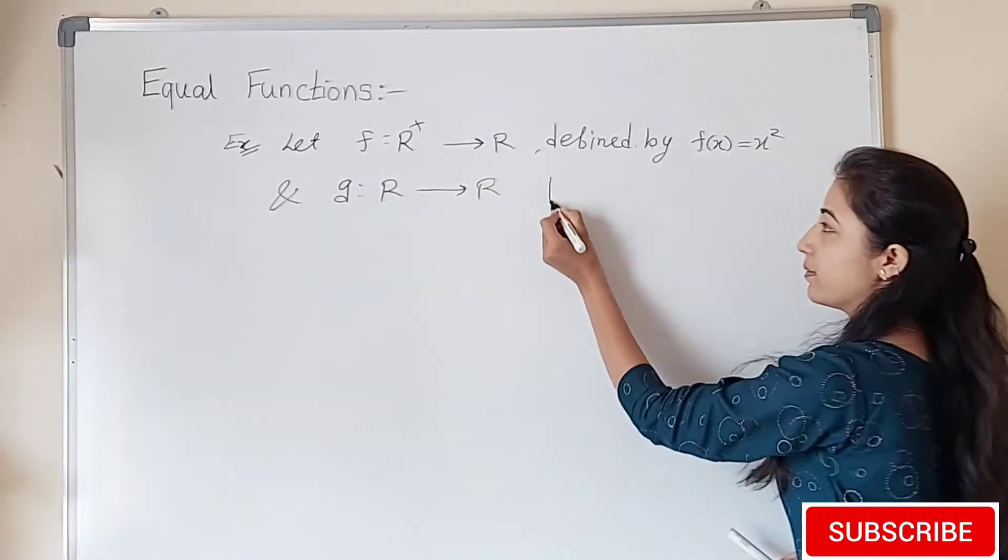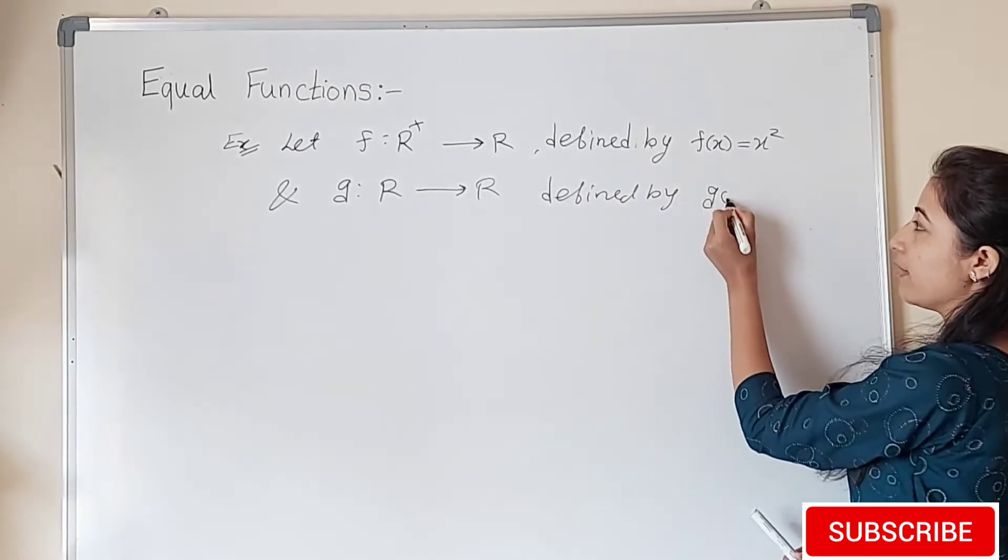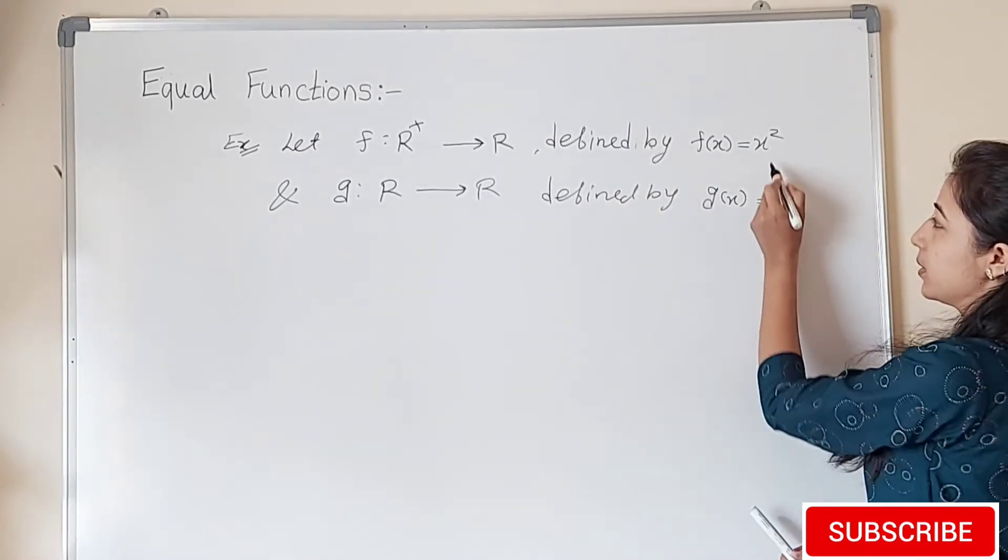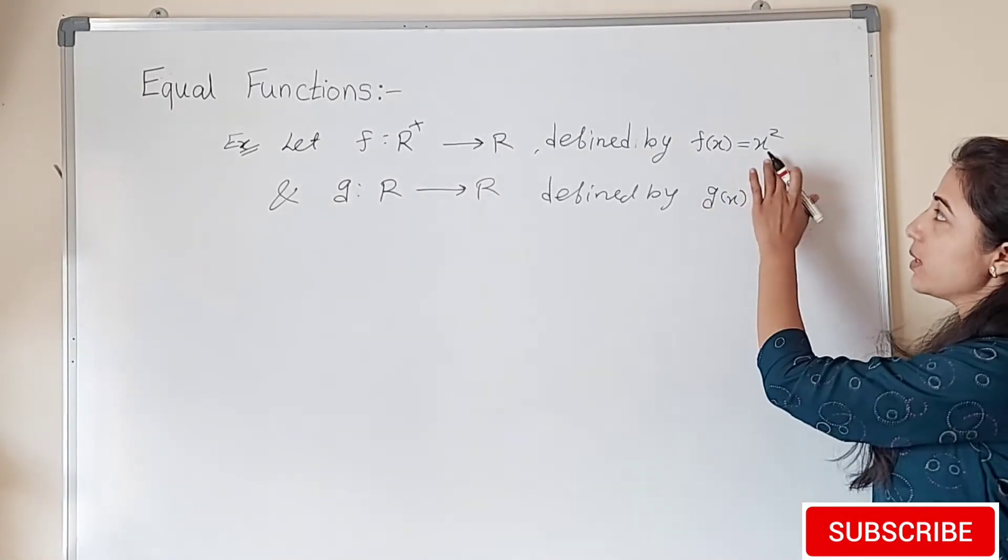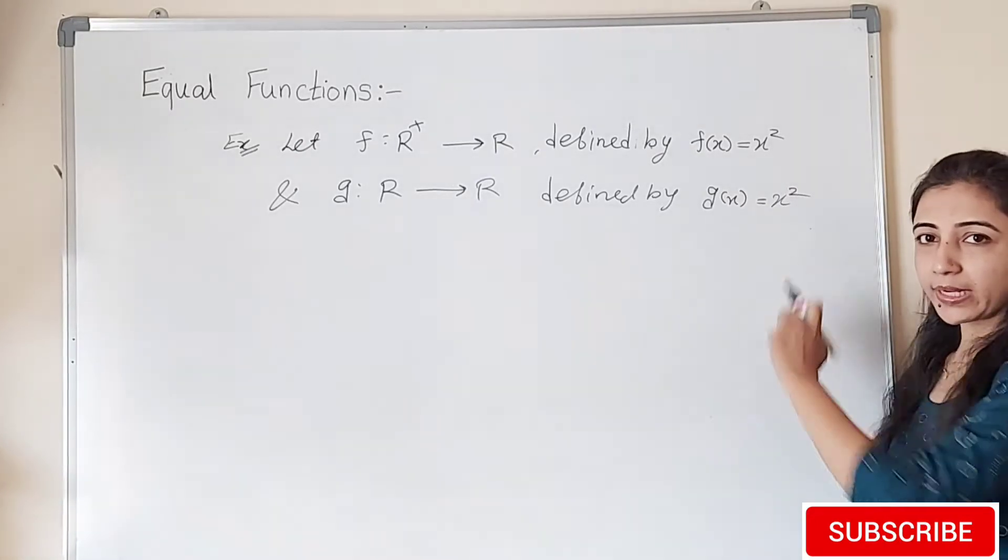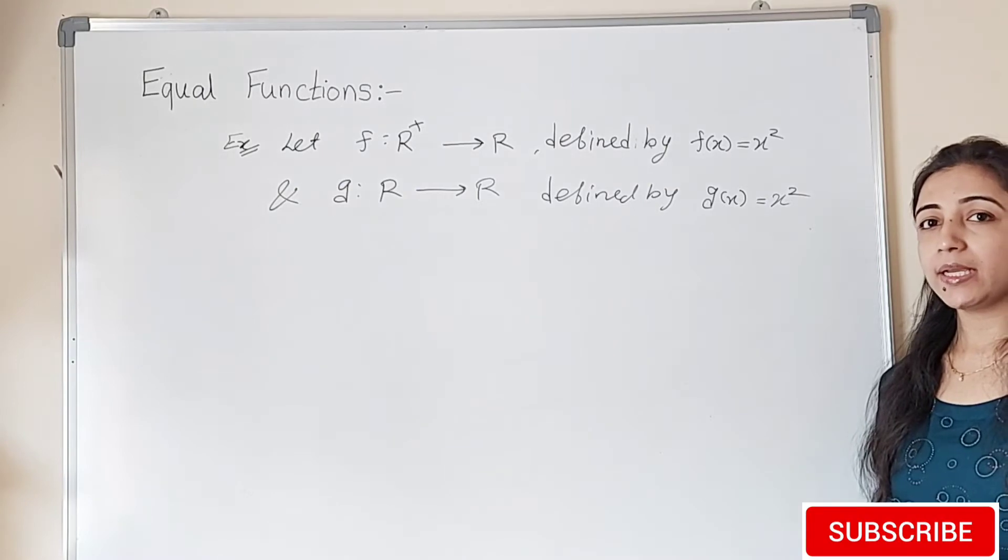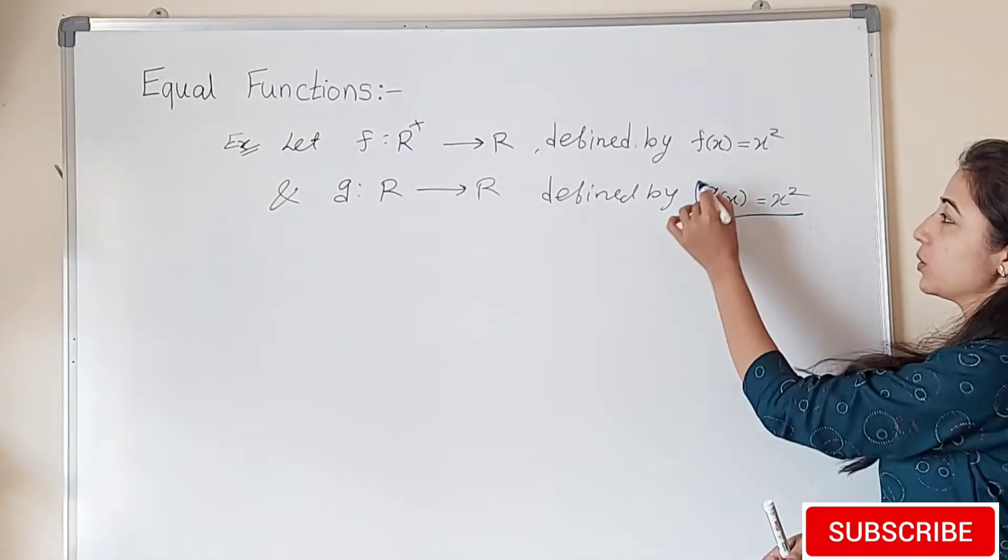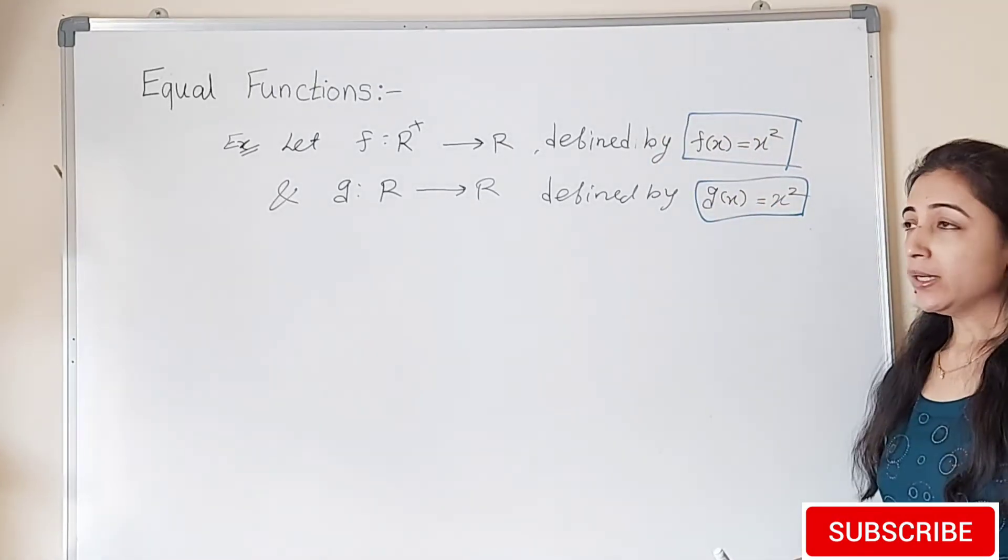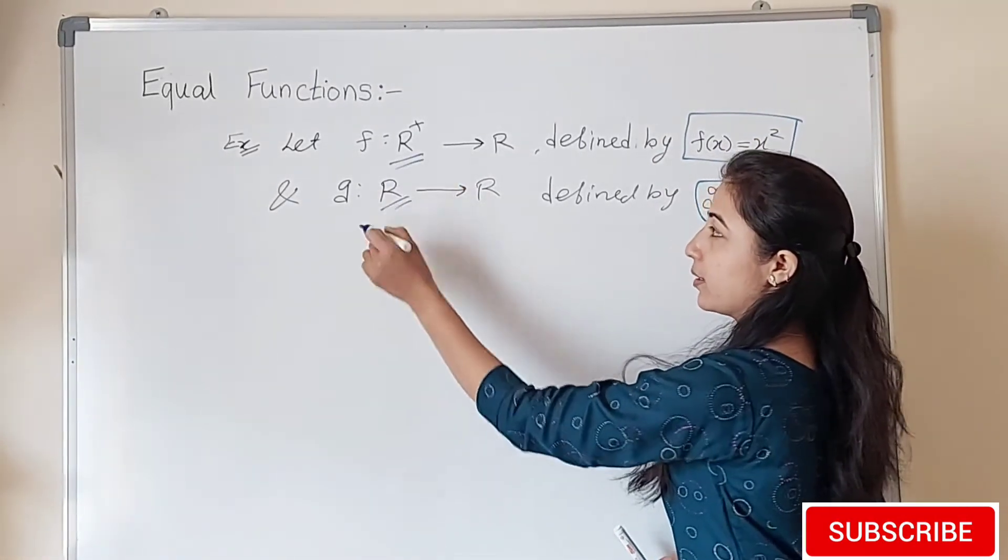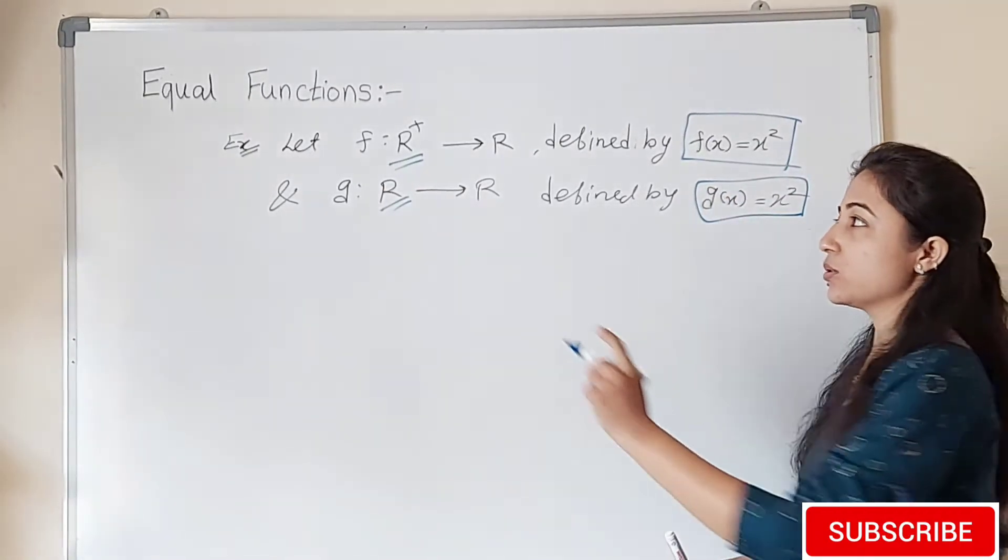And g is a mapping from set of real numbers to R defined by g(x) equals x squared. Now see here, f(x) equals x squared, g(x) equals x squared. It doesn't mean that f(x) equals g(x). Here we cannot say given functions are equal. Why? Because the domain is different.